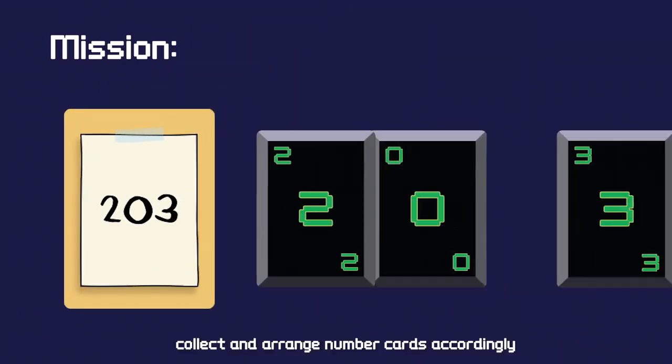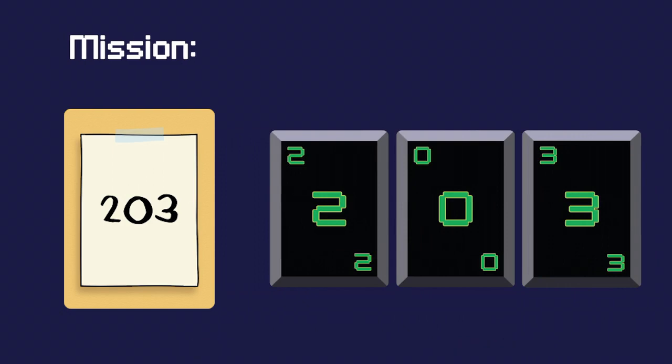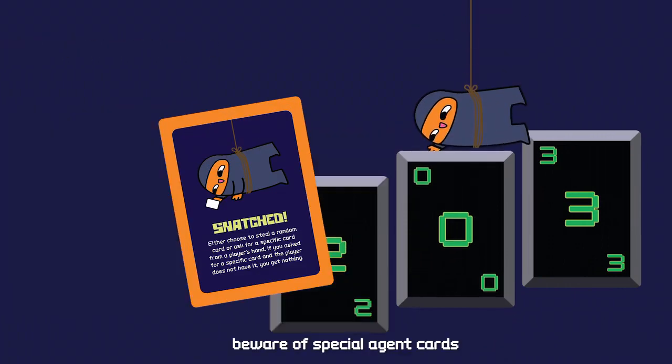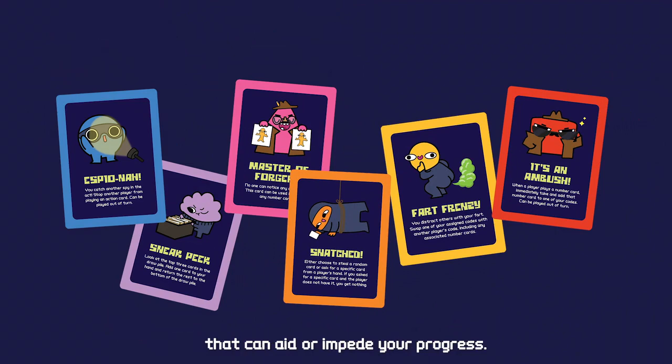To complete a code, collect and arrange number cards accordingly. But watch out. Beware of Special Agent cards that can aid or impede your progress.